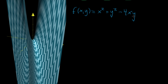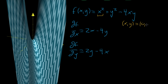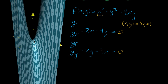Let's analyze the partial derivative information of this function. The partial with respect to x is 2x minus 4y, since y looks like a constant in the last term. The partial derivative with respect to y is 2y minus 4x. When we plug in x equals zero and y equals zero — the origin — both partial derivatives equal zero, so we do indeed get a flat tangent plane at the origin.